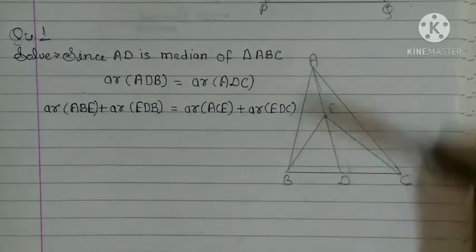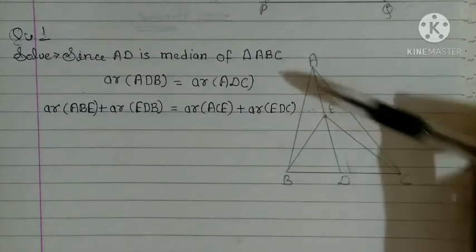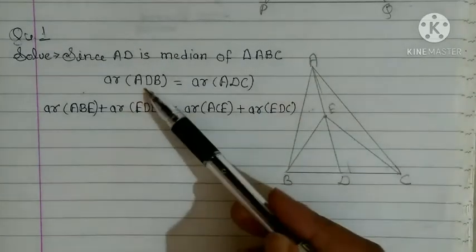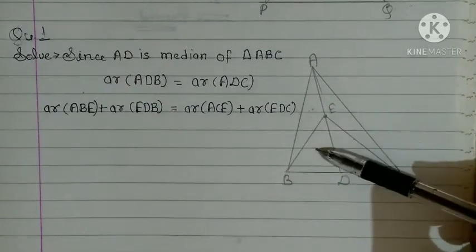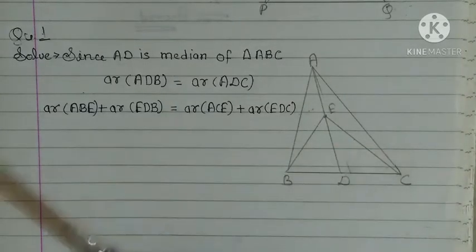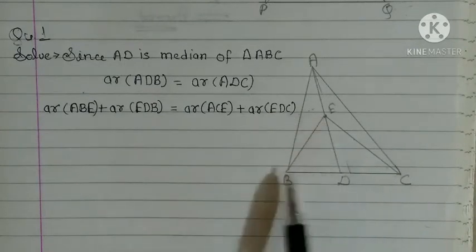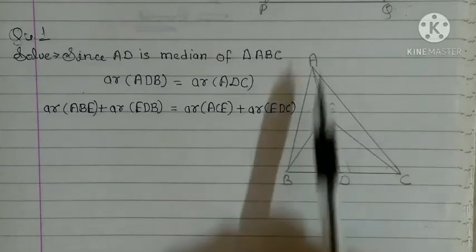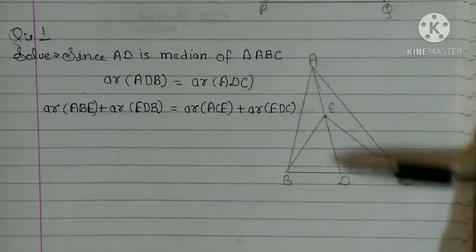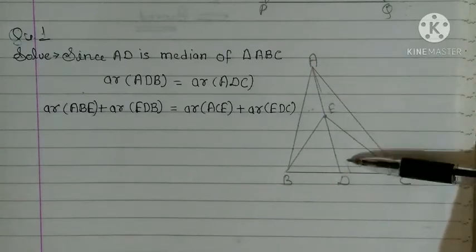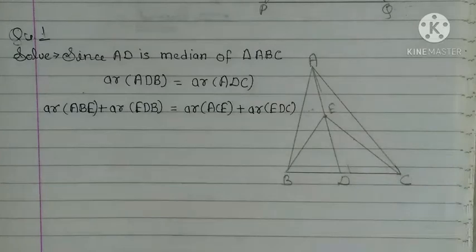Ab yeh bhi dhekhen ki jab yeh is triangle ke anndar dhekhen, is triangle ke anndar haem nai yeh dho triangle dhekhen. Ab yeh eek triangle joh hai, ADE, yeh dhekhen, ADE ke anndar bhi two triangles ban raha hai, to dhono triangles ka sum joh hai, is bade triangle ke equal hooga. Same here, ADC is bade triangle ke anndar, two triangle phir ban raha hai, eek benda raha ACE, aur second EDC.